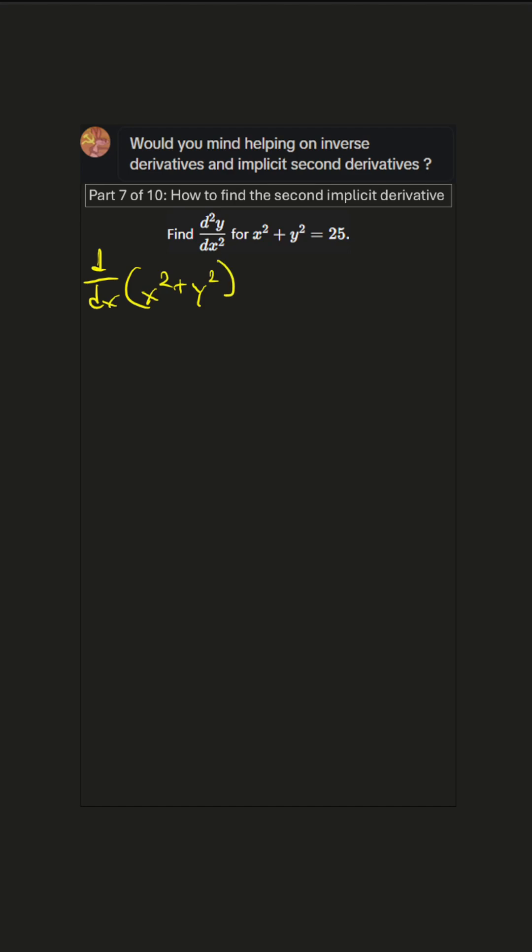So we take d/dx of both sides of the equation and that gives us 2x plus 2y times dy/dx. We have to multiply by dy/dx because we're using the chain rule because we're taking the derivative with respect to x.